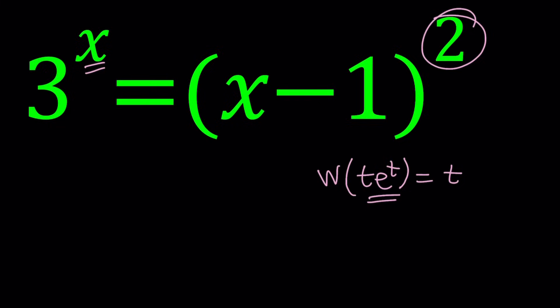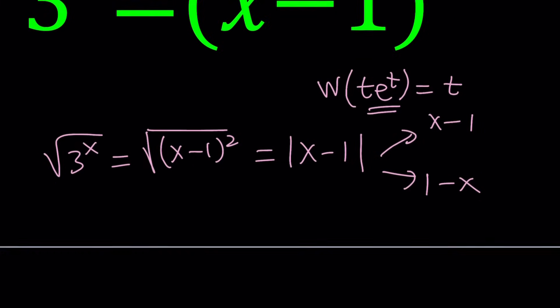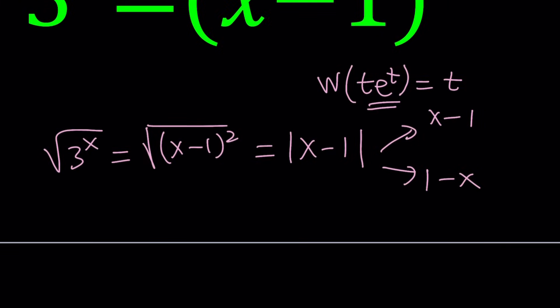If you take the square root of both sides you get the absolute value, and that gives two values depending on x: either x−1 or 1−x. The left side can be written as the square root of three to the power x, which is an exponential function with base greater than one — so it's an increasing function. That's important to know.